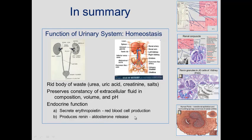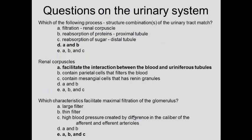Question: which process-structure combinations match? Filtration with renal corpuscle — yes. Reabsorption of protein in the proximal tubule — yes. Reabsorption of sugar in the distal tubule — no, it's already done in the proximal tubule, so the answer is D. Renal corpuscles facilitate interaction between blood and urinary tract tubules — yes. Do they contain parietal cells that filter blood? No — the parietal cells contain the filtrate; it doesn't touch the blood.